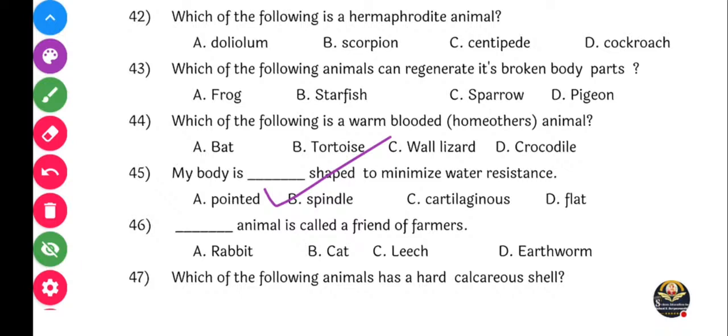Next question: Dash animal is called a friend of farmers. Kontha animal a friend of farmers manthat? Correct answer - that is Answer D, earthworm.